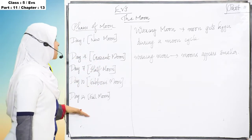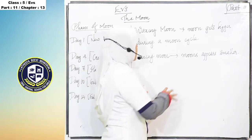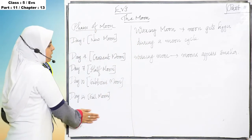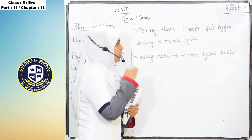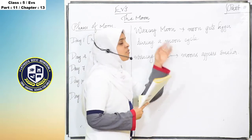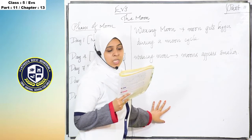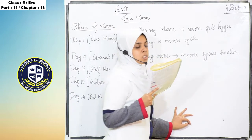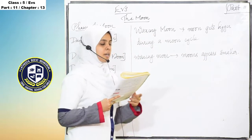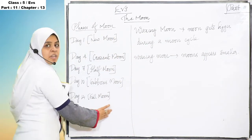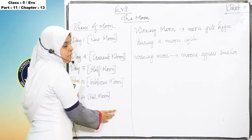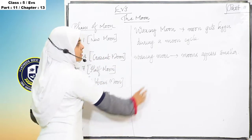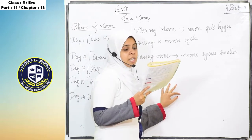Next is waxing moon and waning moon. When the moon appears to get bigger during the moon cycle, it is called waxing moon. This phase occurs when the moon changes from a new moon to a full moon. This cycle also takes 14 days to complete.